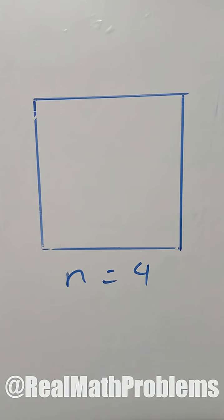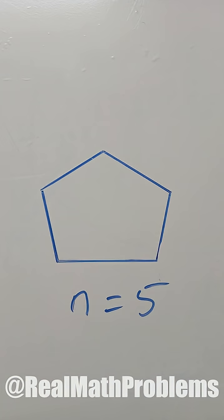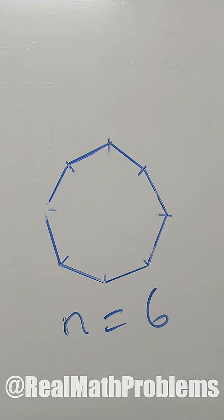With n equals 4, or a square, is 360. But how about n equals 5, or 6, or even larger?